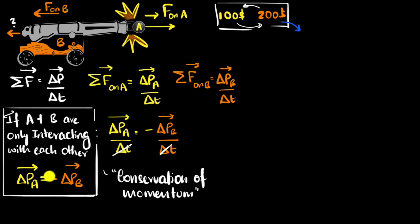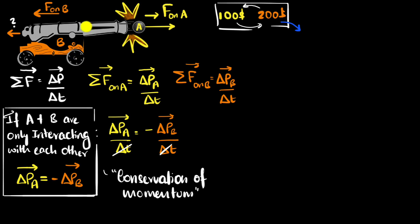The beauty is this can be extended to any number of objects. Imagine now if we had three objects, and again under the condition that they're only interacting with each other, then the total momentum of those three objects should stay the same. The condition is that there shouldn't be a fourth object that they're interacting with — that would be an external force, which would change the momentum of those three objects together. This is the powerful conservation of momentum.